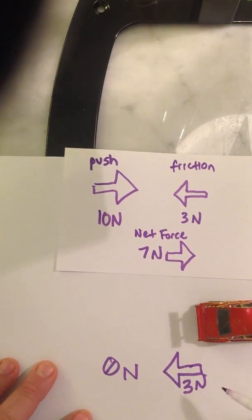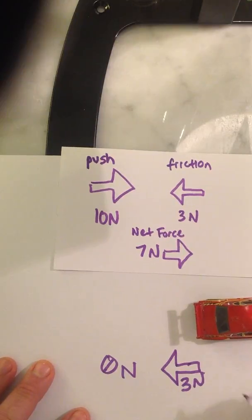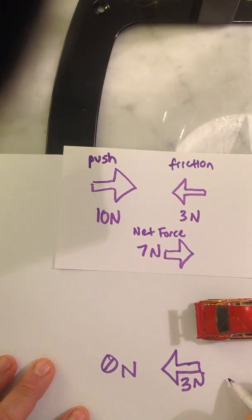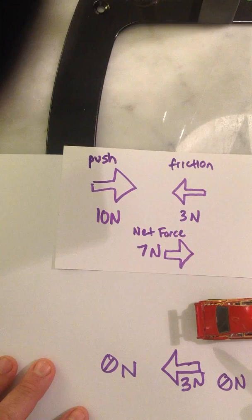Once the car stops moving altogether, then friction no longer exists either because the car is not moving and therefore friction becomes 0 newtons as well. And that's why the car remains at rest.